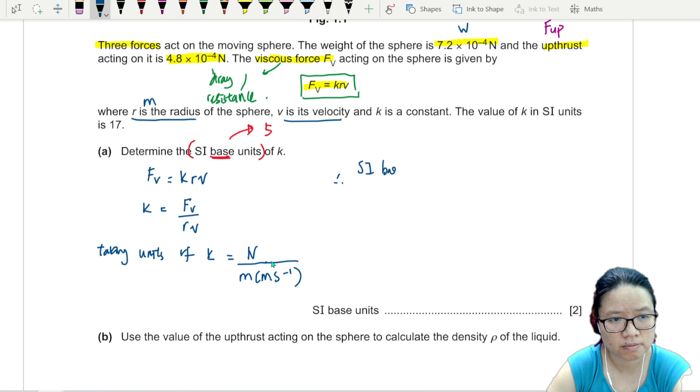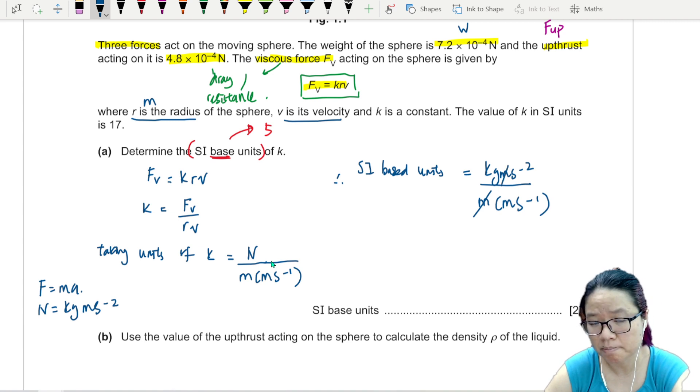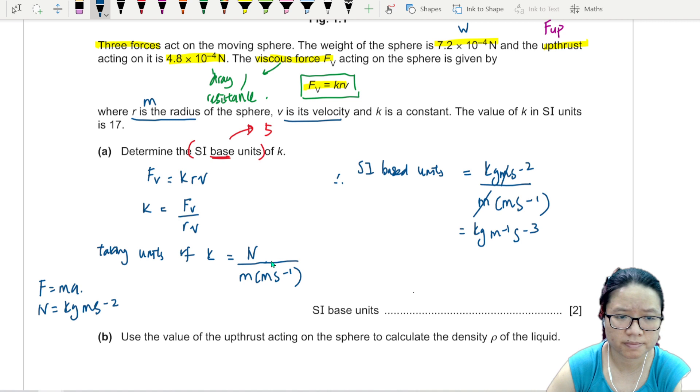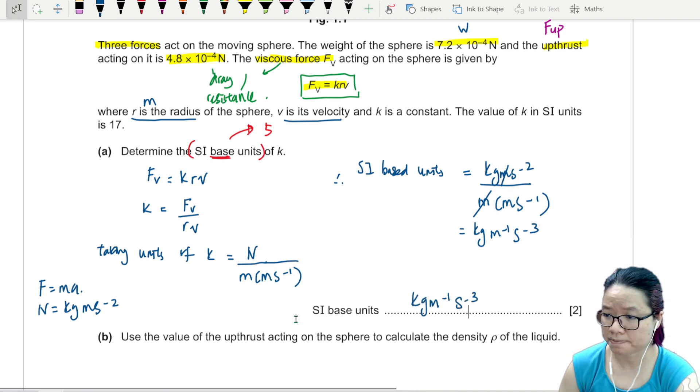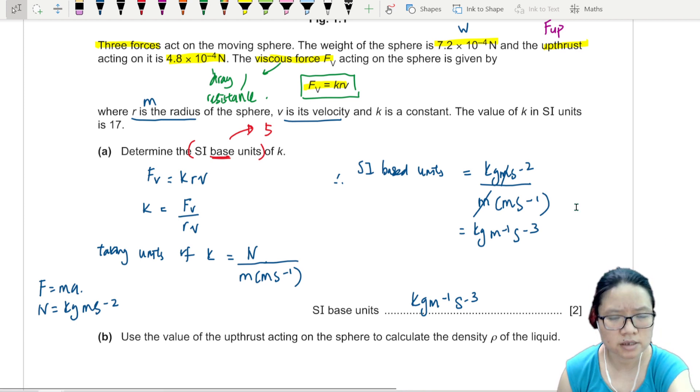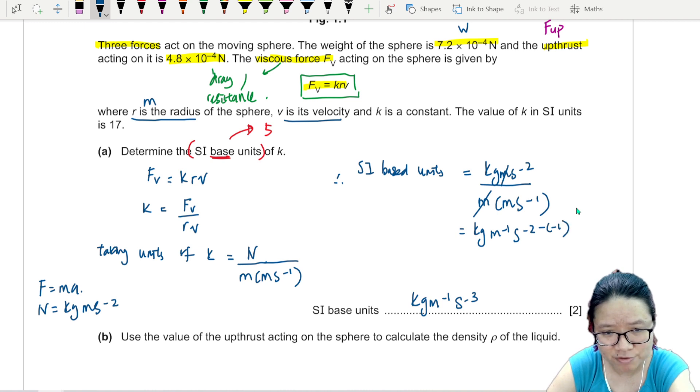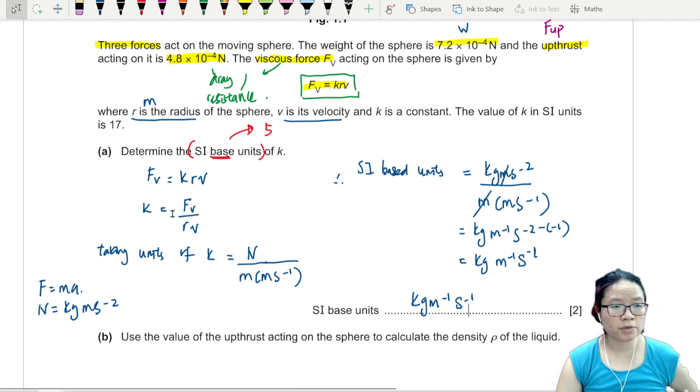If you think of Newton, F equals MA, so Newton is kg ms negative 2. This one will be kg ms negative 2 divided by m bracket ms negative 1. We can cancel off the m. And then what we have left is kg meter negative 1, s negative 2 over s negative 1 is negative 2 minus negative 1, which is negative 1. So kg m negative 1 s negative 1.